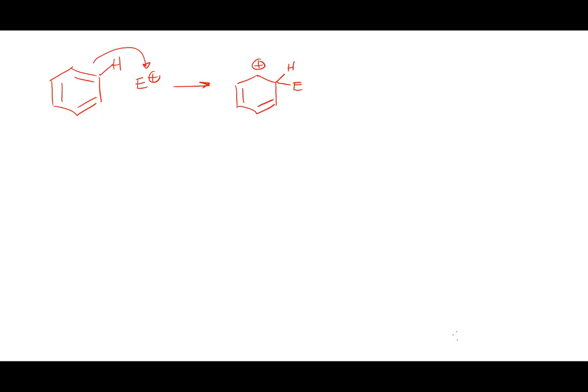I add the electrophile to the carbon with the hydrogen — what did I just make? An allylic carbocation. That allylic carbocation has two more resonance structures. I take this pair of electrons, move it over, and form a resonance structure with the plus charge. What would have been para in a benzene ring — away from where I added the electrophile — I have one more double bond I could move, forming the plus charge there.